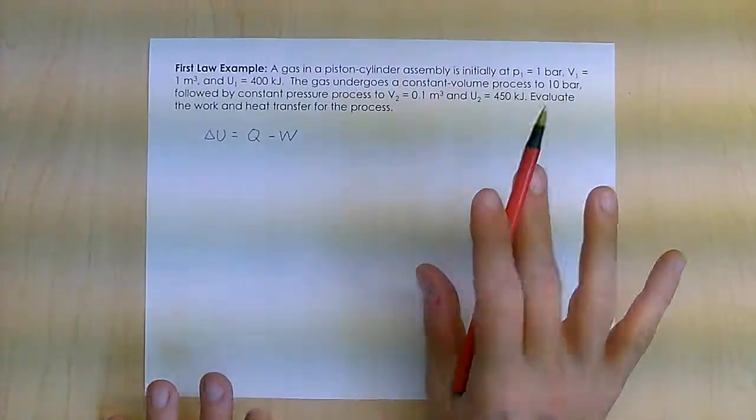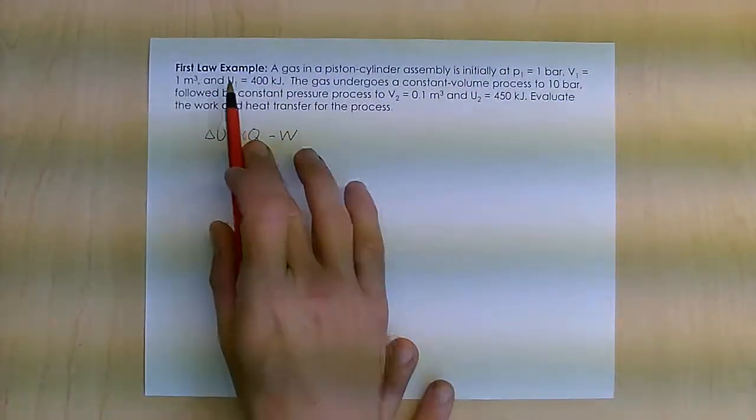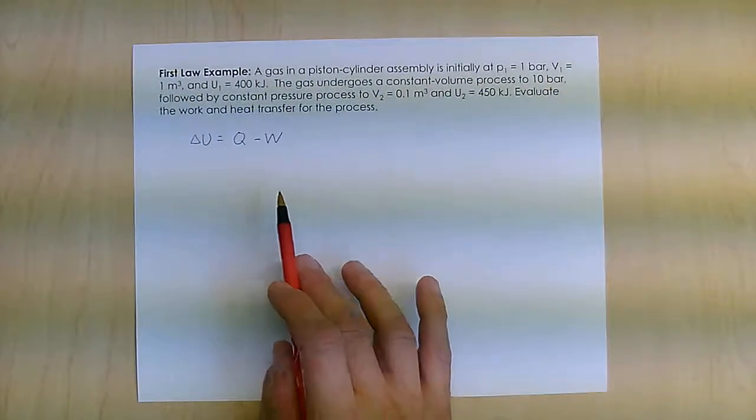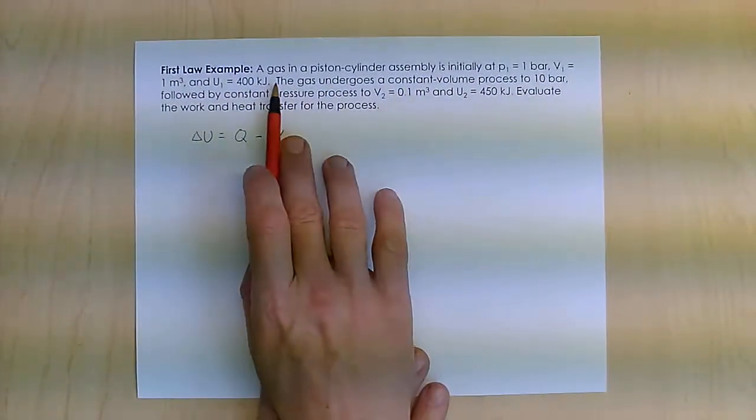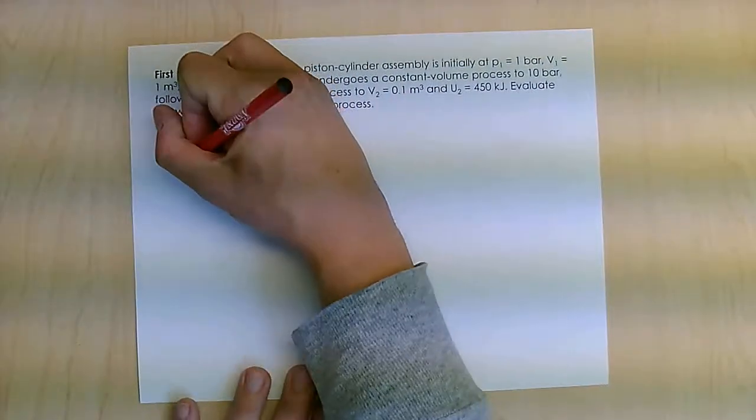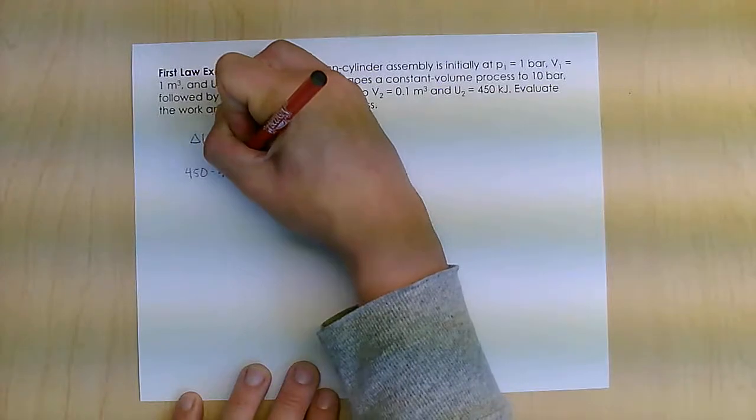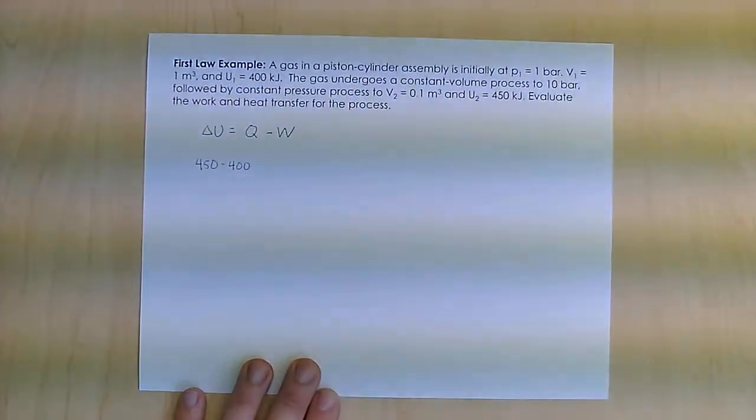I have two processes here between the total states: a constant volume and a constant pressure. What I know is that I have a total change in energy of 450 minus 400, my final energy minus my initial energy.